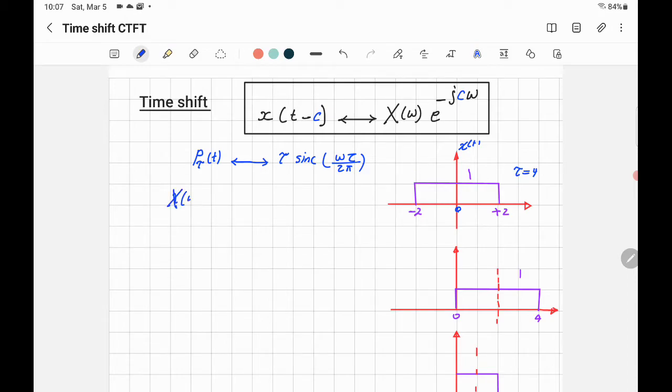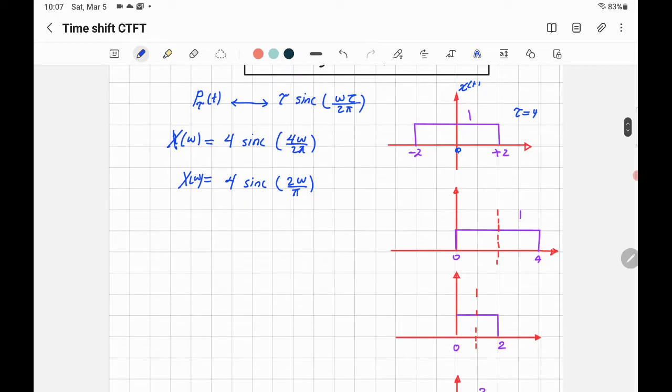So you have X(ω) will be equal to 4 sinc(4ω/2π), which is equal to 4 sinc(2ω/π). That's X(ω) here. Now let's look at this signal. This signal, let's call it Y(t). It looks exactly like X(t), even the same width, but starts from 0 up to 4.